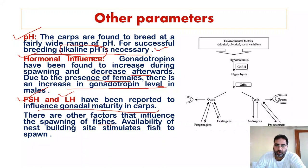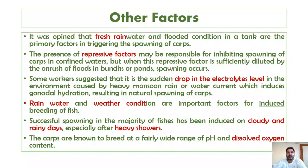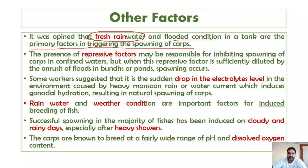Other factors that influence spawning in fishes include the availability of a nest building site — if a fish finds a suitable nest building site, it also stimulates the fish to spawn. Earlier it was opined that fresh rainwater and flooded conditions in tanks are primary factors in triggering spawning. Stimulatory factors include increase in dissolved oxygen, increase in pH, thundering, rain, fast currents, optimum temperature, and photoperiod.